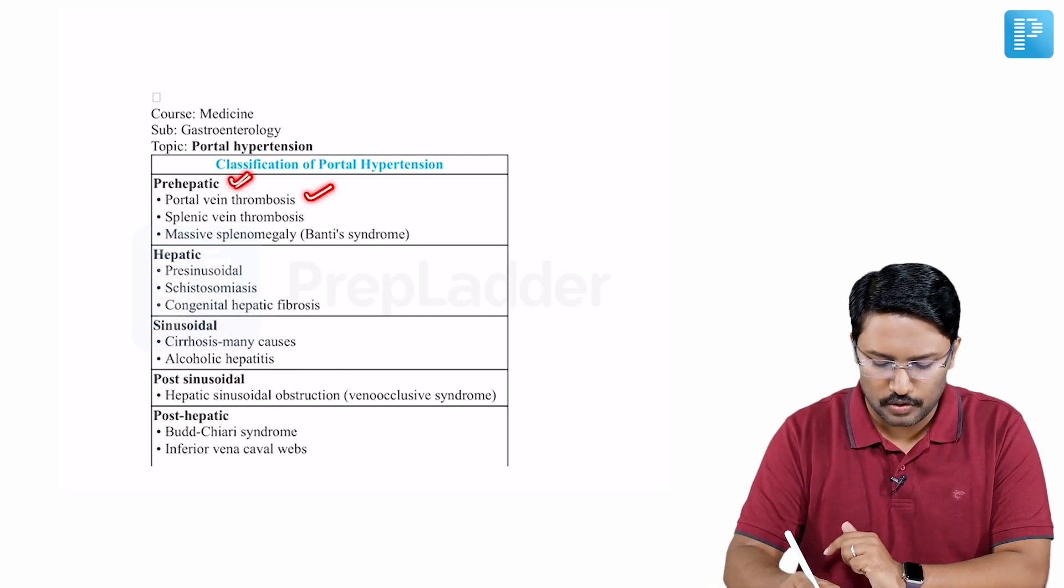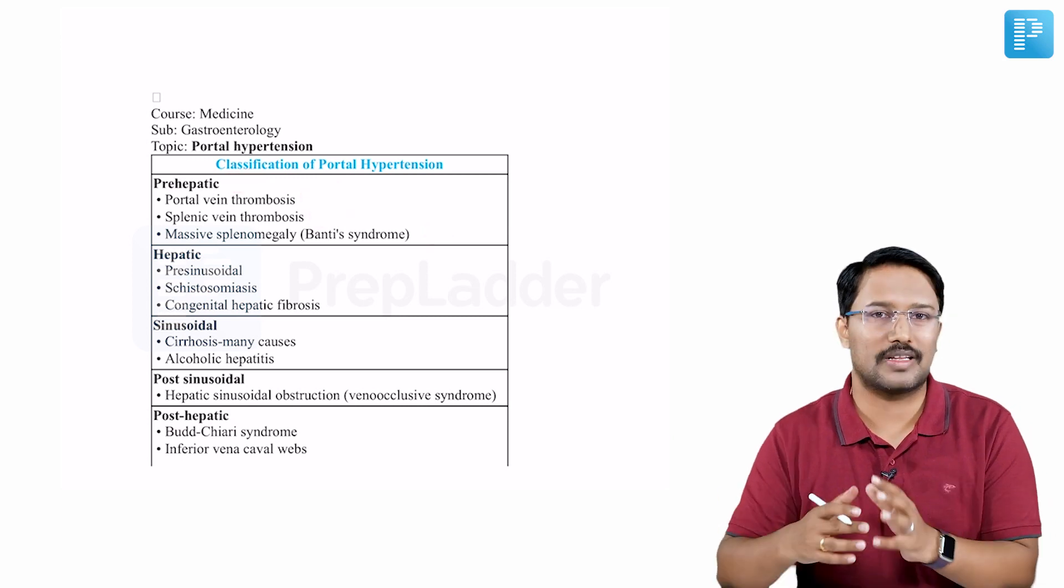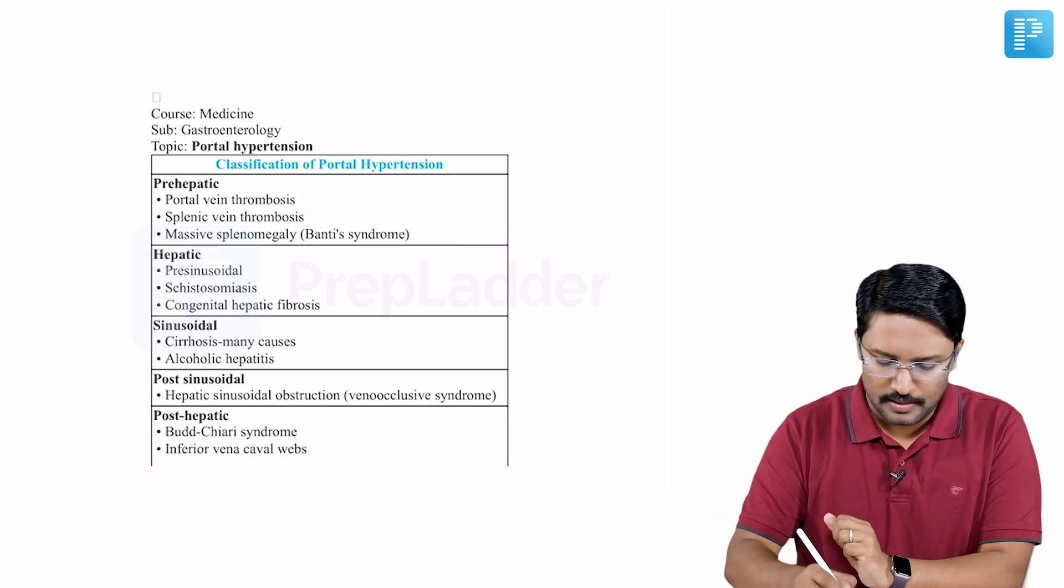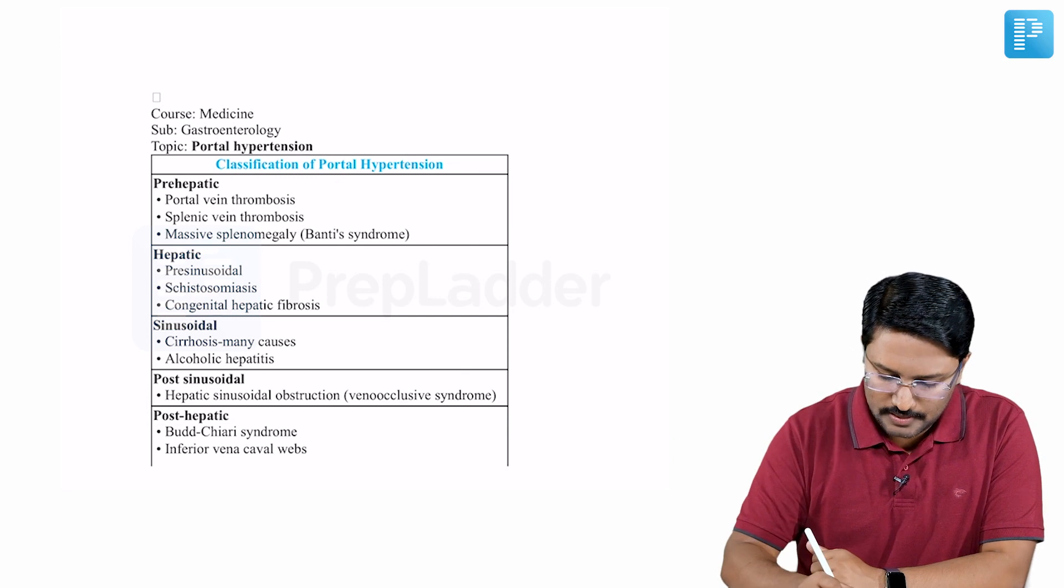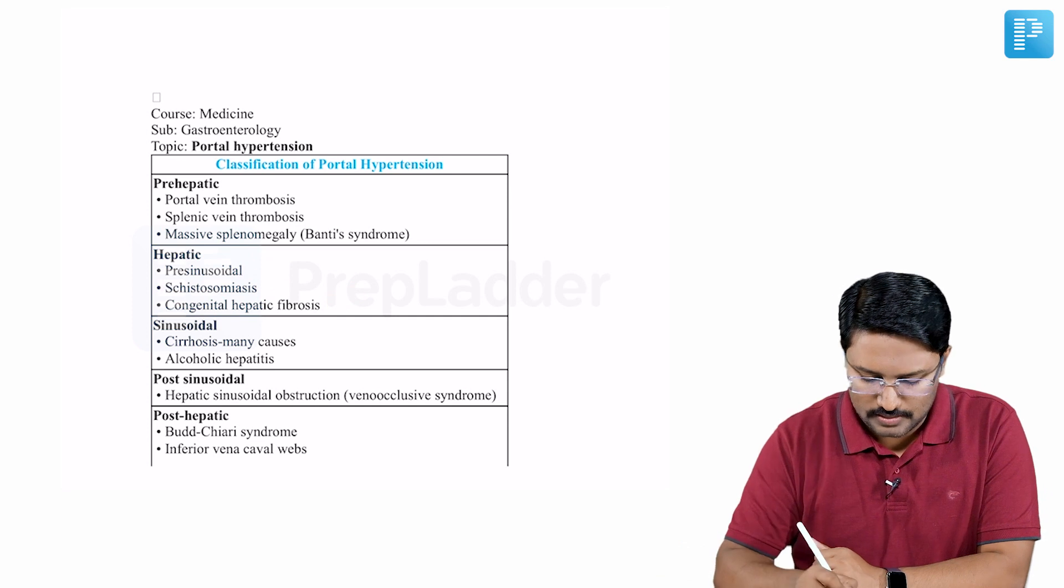So pre-hepatic causes include portal vein thrombosis, splenic vein thrombosis, and Banti syndrome, what we also call as massive splenomegaly. Hepatic can be further classified as pre-sinusoidal, schistosomiasis, and congenital hepatic fibrosis.